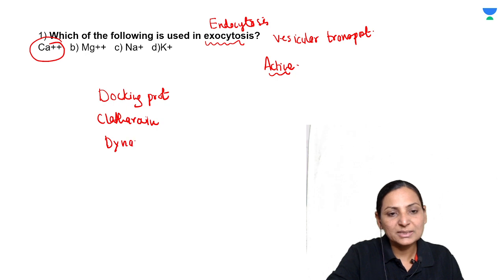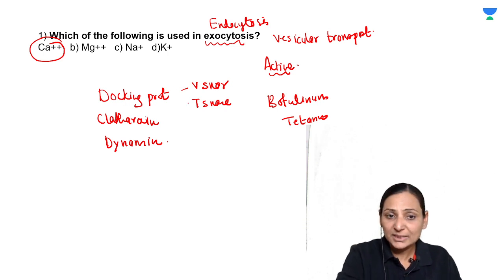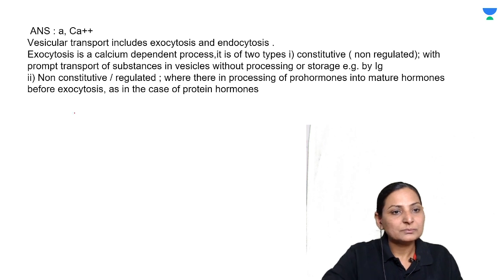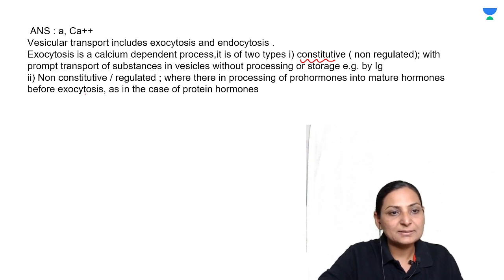All these things they come into your vesicular transport. If you remember, docking proteins are the V-SNARE proteins and the T-SNARE proteins. Toxins like your botulinum toxin and tetanus toxin, they basically interfere with the functioning of these V-SNARE and T-SNARE and prevent the release of the neurotransmitter. Exocytosis is of two types: constitutive that is non-regulated, and non-constitutive that is regulated where there is processing of your protein hormones.